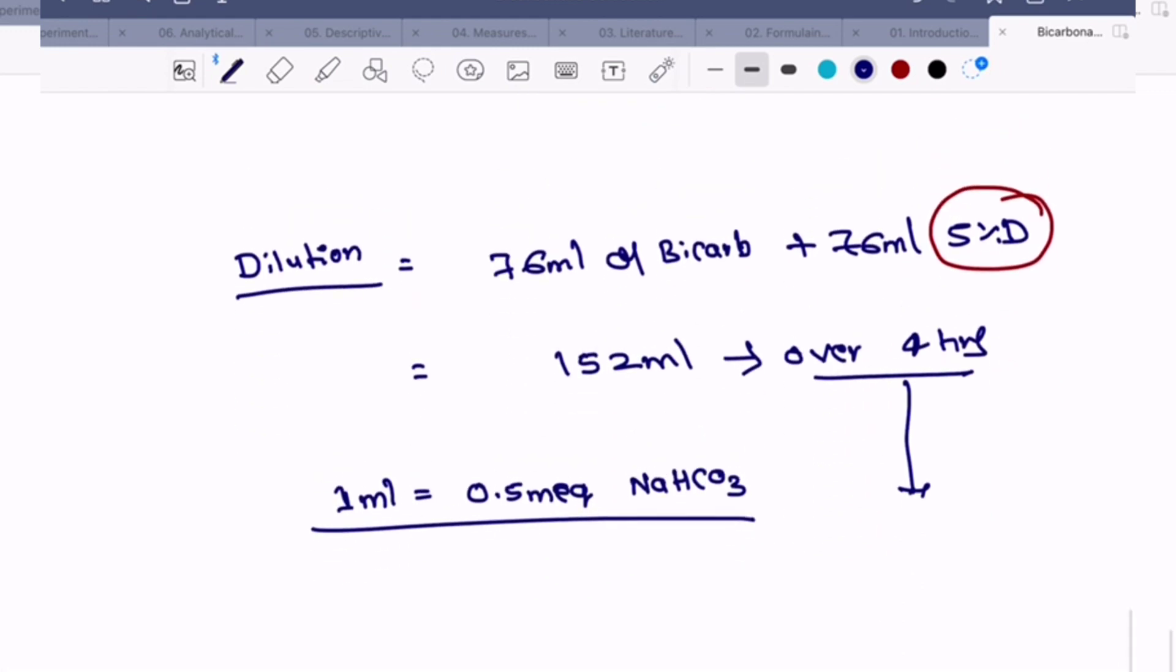We have to keep the rate over 4 hours, which means 152 divided by 4 - that will give 38 ml per hour.